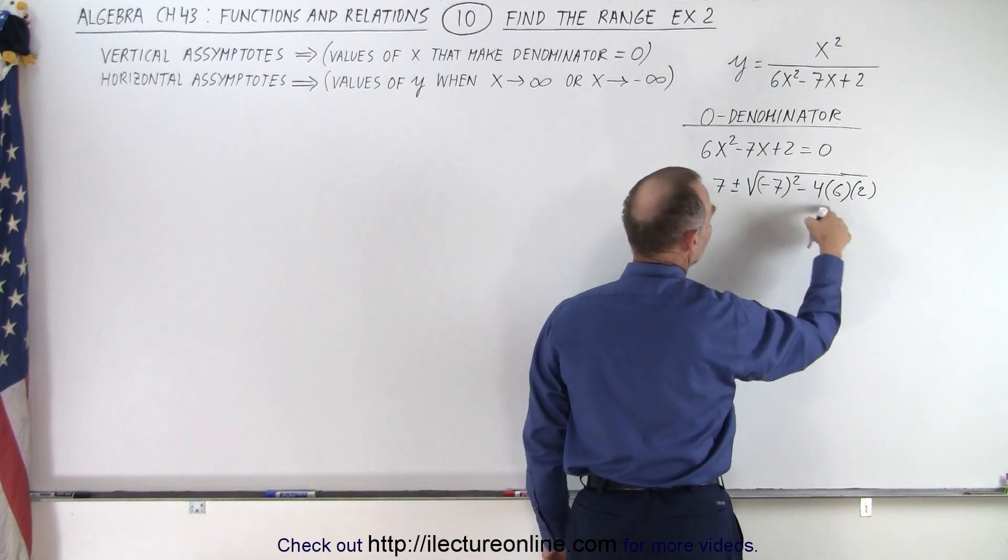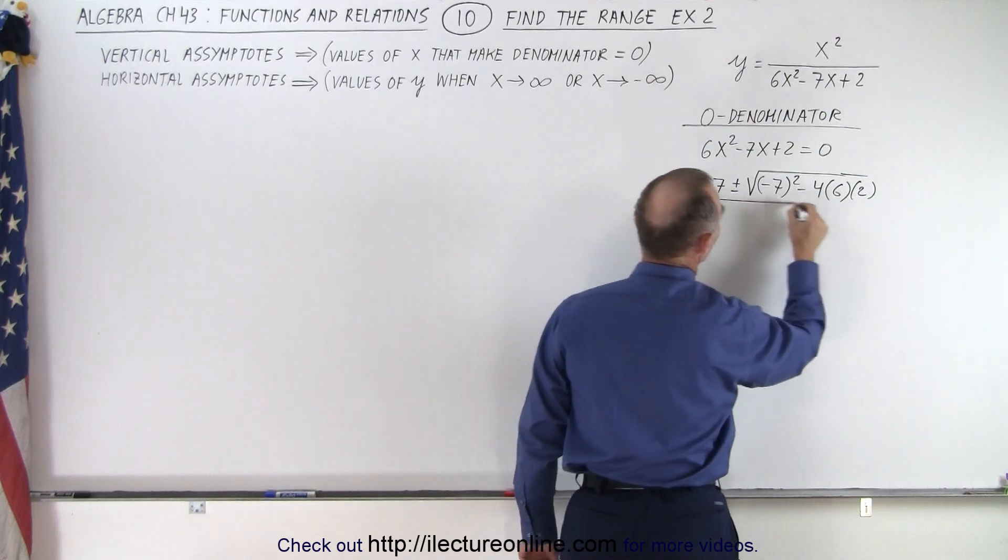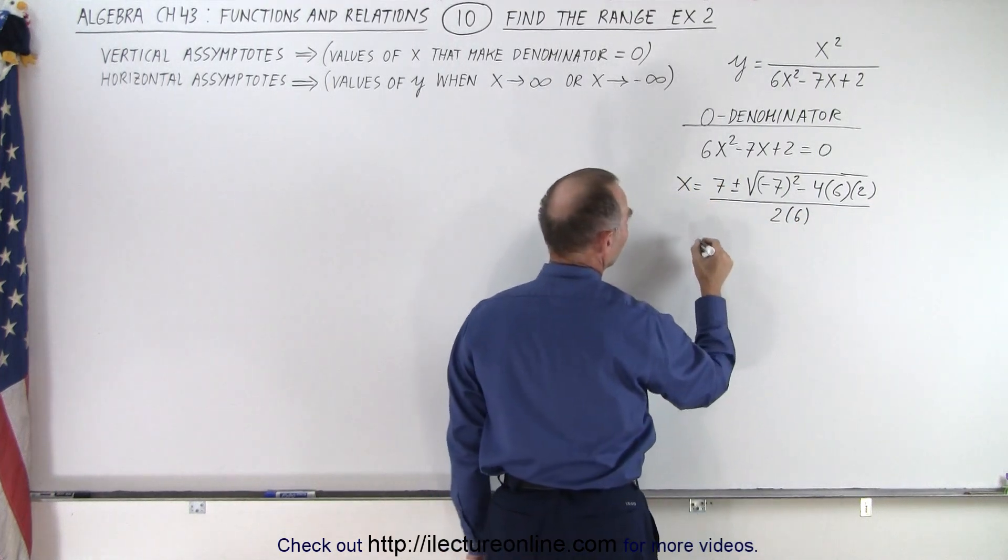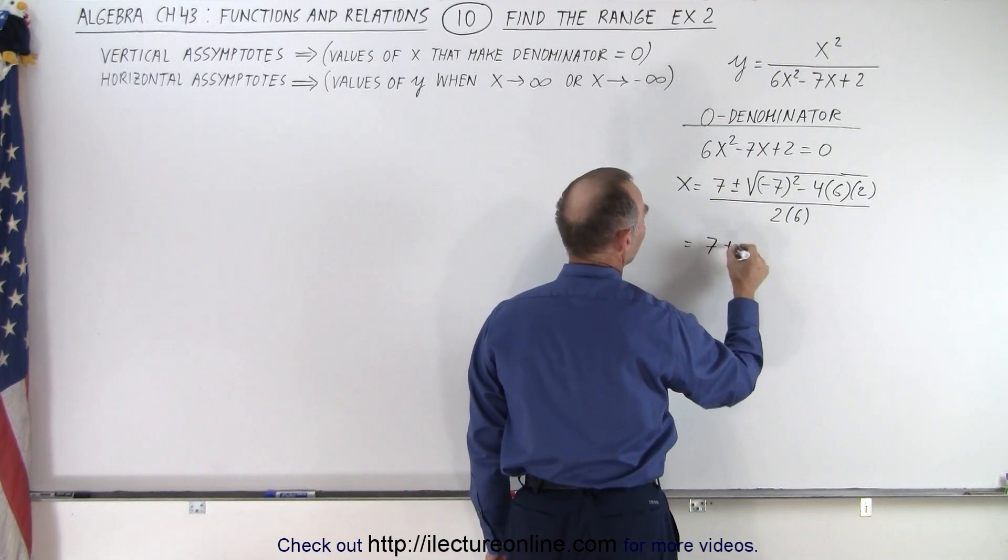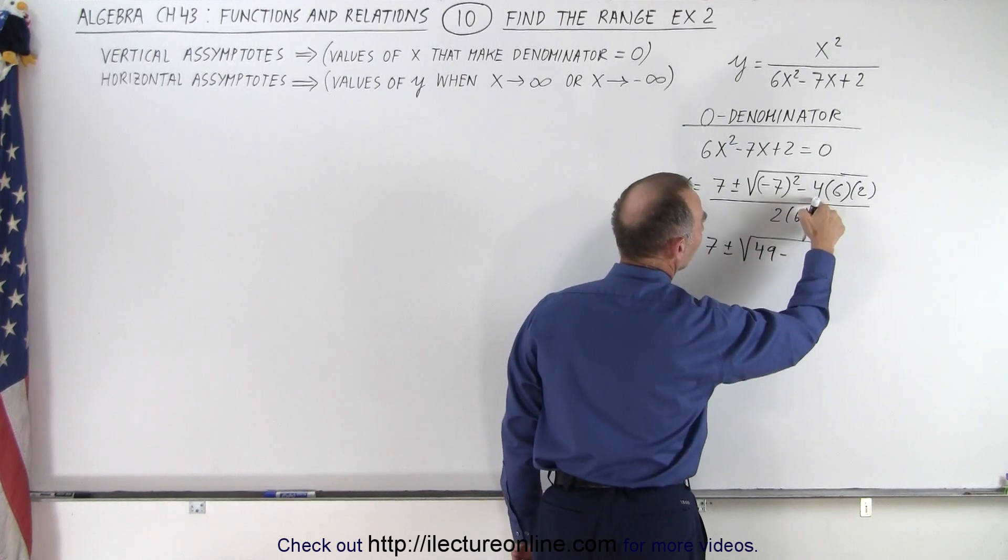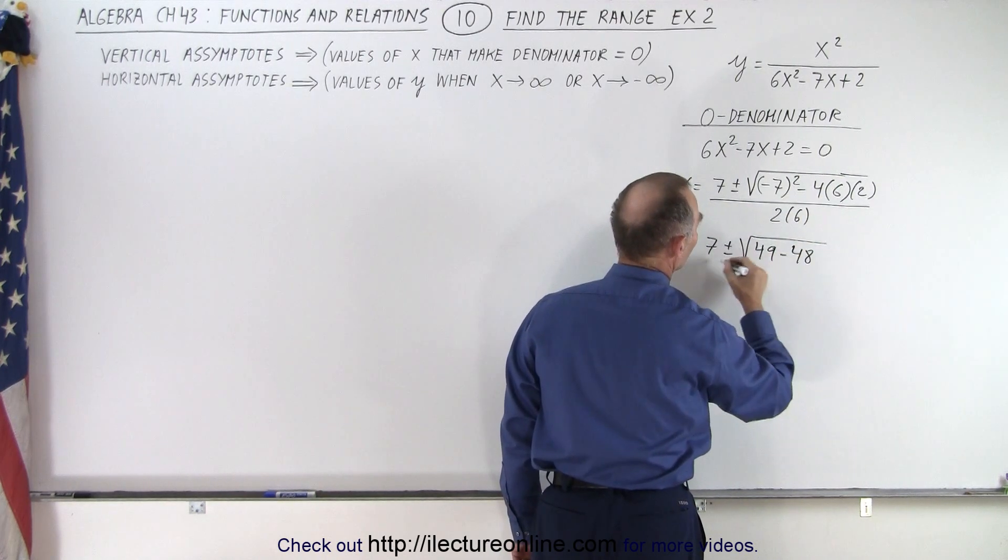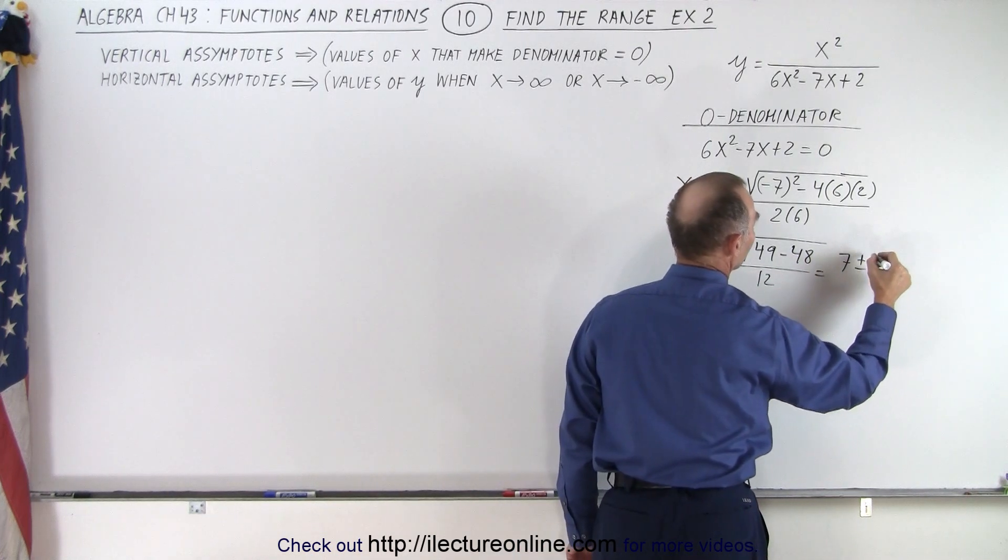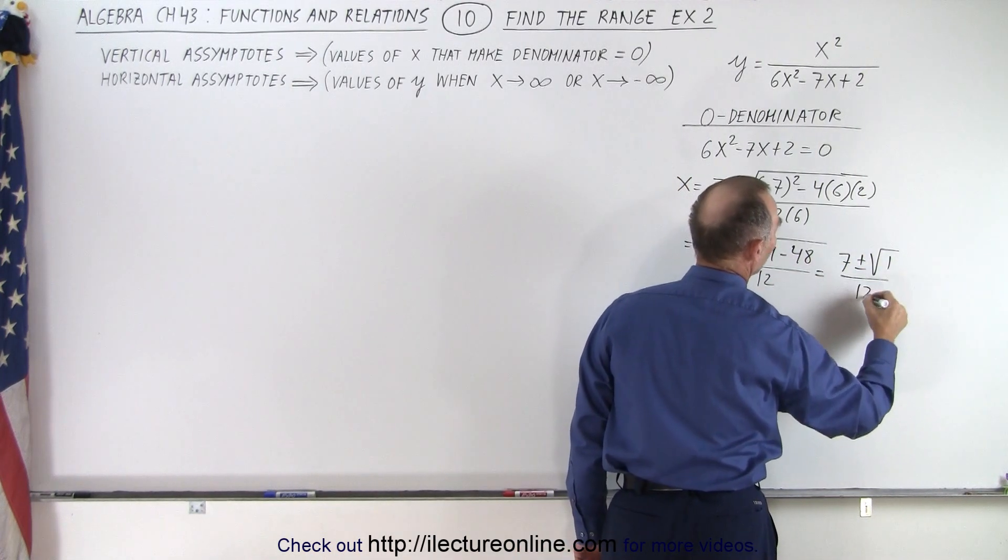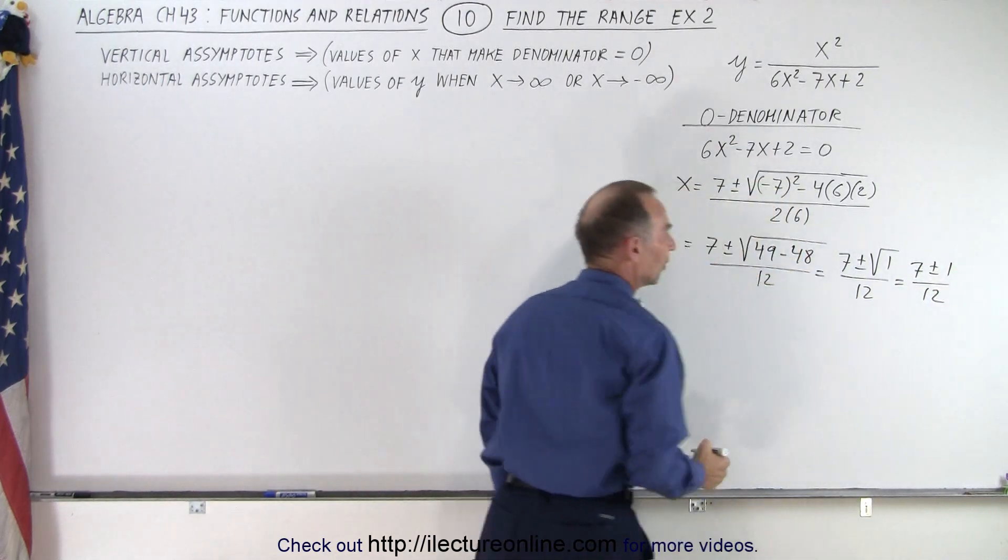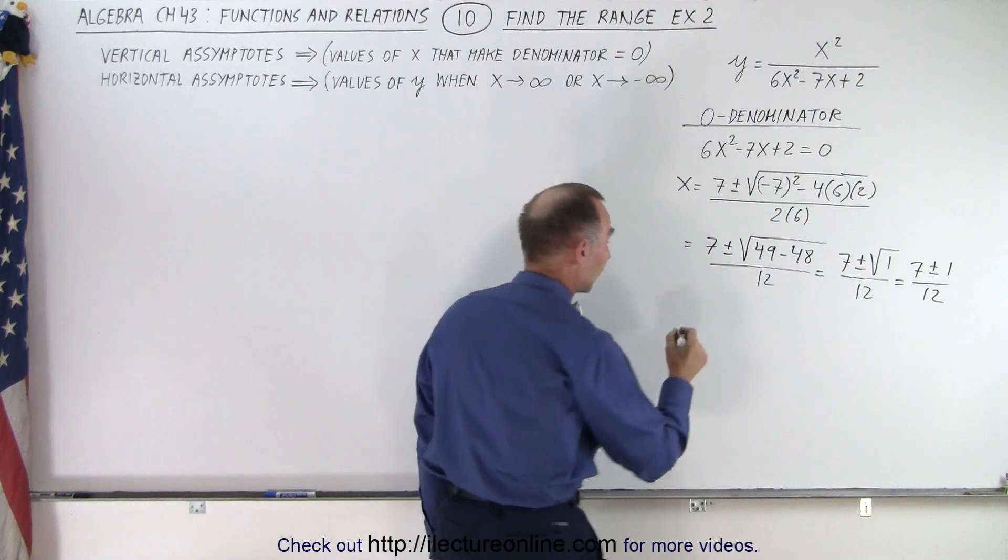And yes, indeed, this will be greater than zero. We divide all that by twice a, which is 2 times 6. This becomes equal to 7 plus or minus the square root of 49 minus 48 divided by 12, which is 7 plus or minus the square root of 1 divided by 12, which is equal to 7 plus or minus 1 divided by 12. And so that gives us two possible values for x.